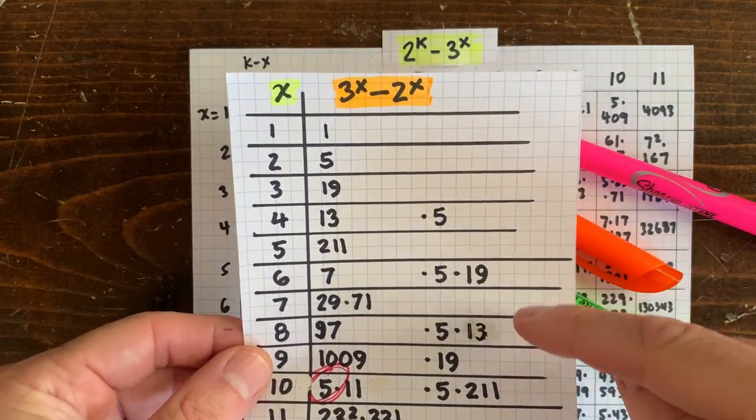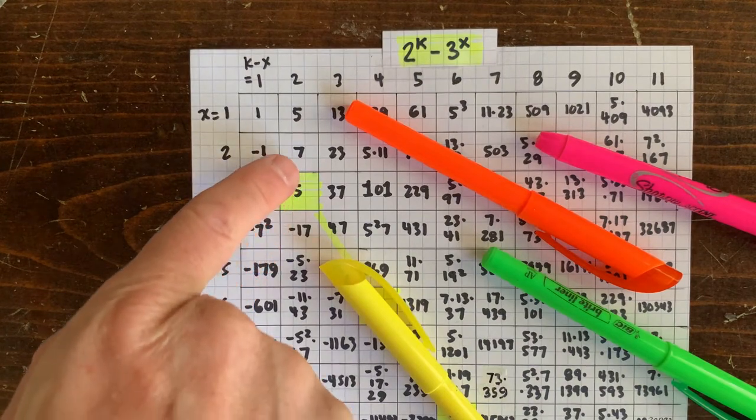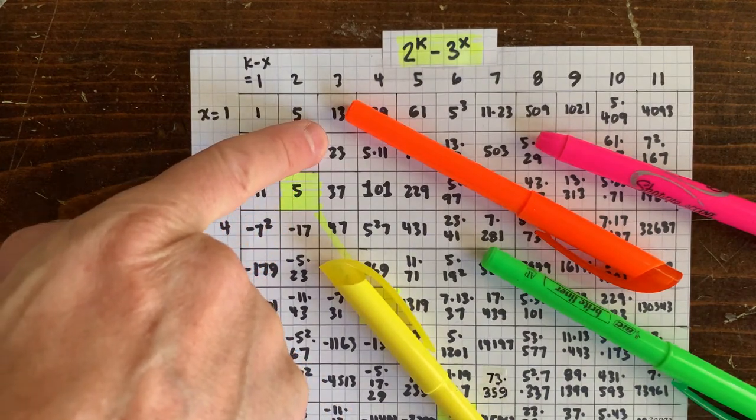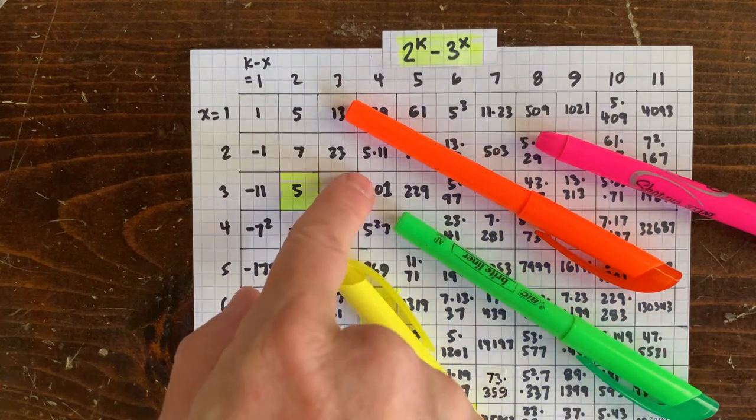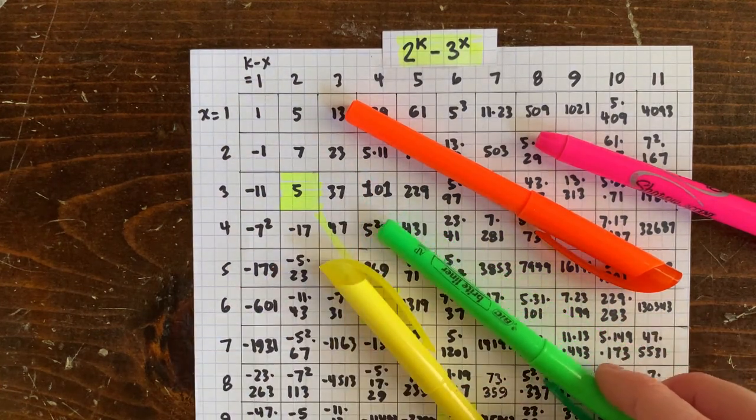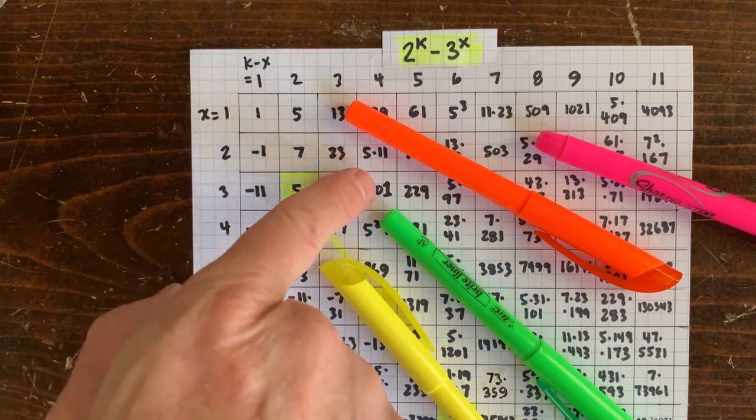But over here, this ray starts with 23, so there's a bunch of 23s all along here. And this ray starts with 101, so there's a bunch of 101s along here. So what's up with these 23 and this 101 and this 5? Can we say something about them in terms of x and k minus x?